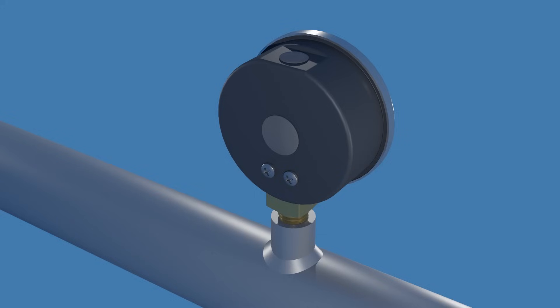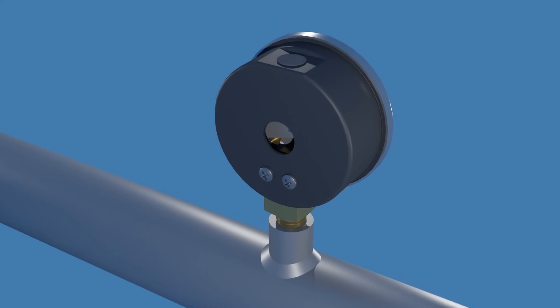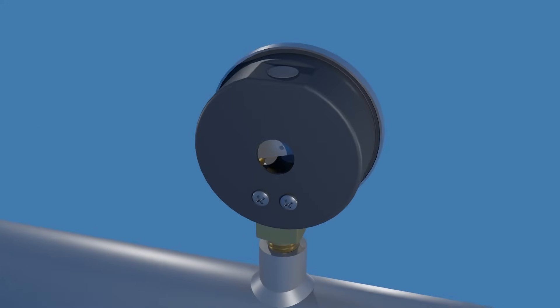Some pressure gauges have a blowout plug on the back. They act as a pressure relief mechanism designed to release the overpressure away from the operator in the event of a catastrophic failure of the pressure sensing element inside the gauge.